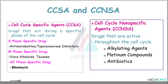Cell cycle specific agents are drugs acting during a specific phase of the cell cycle. Drugs which work on the S phase are antimetabolites and topoisomerase inhibitors. Drugs which work on the mitotic phase or M phase are vinca alkaloids and taxanes. Drugs which work on the G2 phase include bleomycin. On the other hand, cell cycle nonspecific agents are active throughout the cell cycle and include alkylating agents, platinum compounds, and antibiotics.